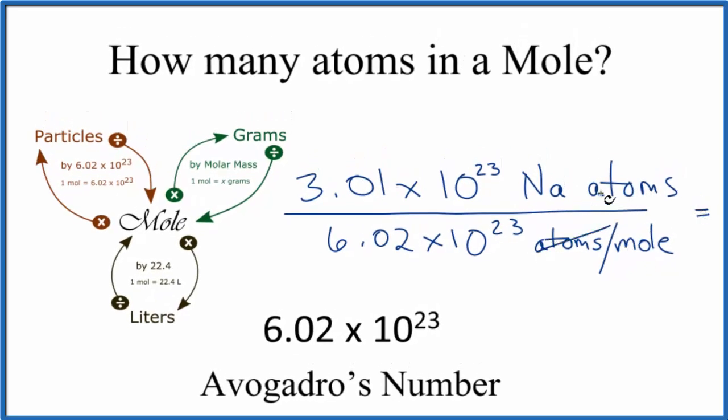When we divide, atoms will cancel out. We're going to be left with moles. So we'll have 0.5 moles of sodium. So we can go from moles to atoms by multiplying, or if we have atoms, we can go back to moles by dividing.